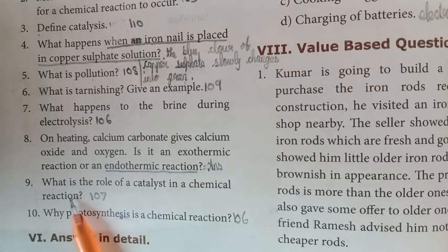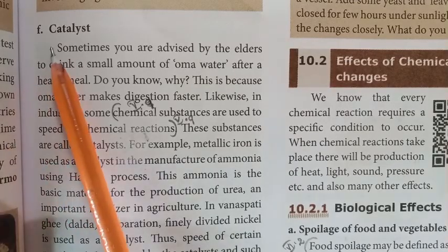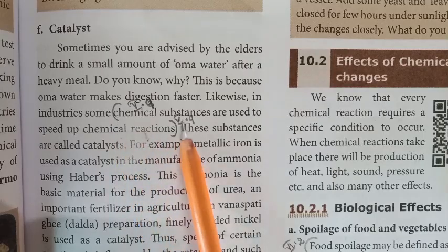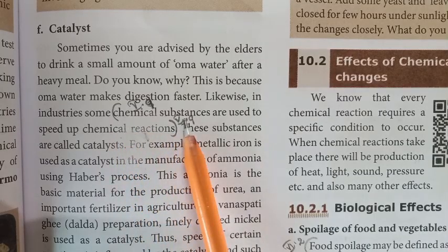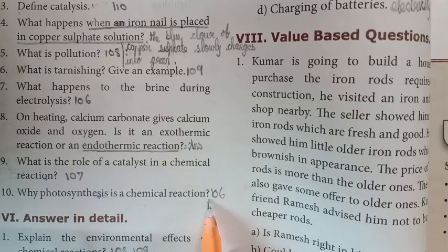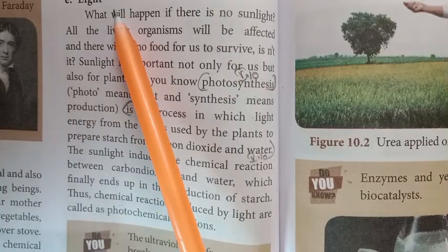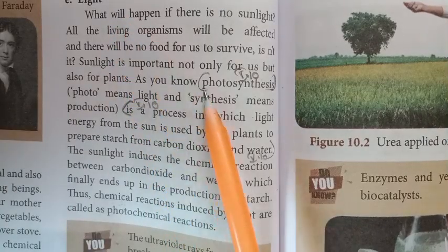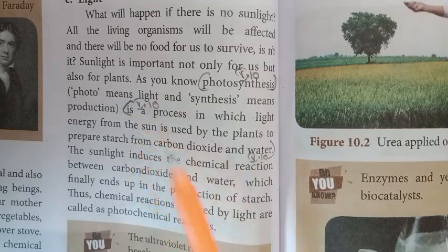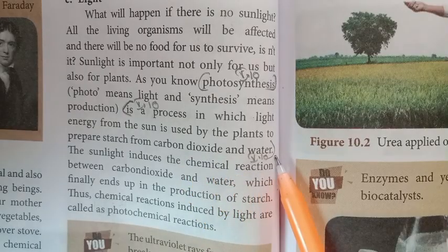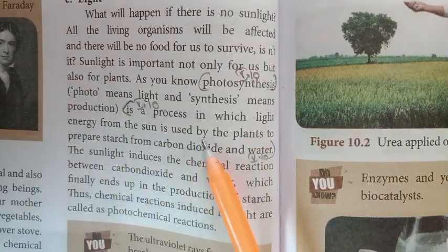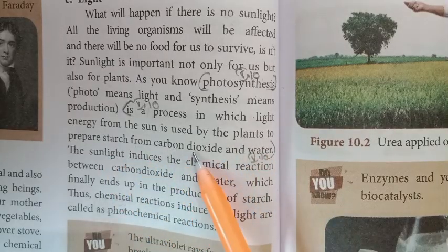Next question answer from page number 107, under the heading 'Catalyst,' first paragraph — mark the fifth line: chemical substances are used to speed up chemical reactions. Next, from page number 106, photosynthesis: photosynthesis is a process in which light energy from the sun is used by plants to prepare starch from carbon dioxide and water.